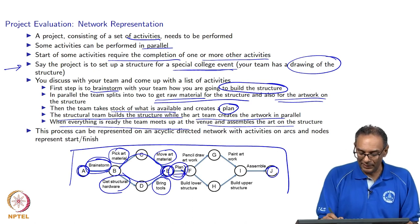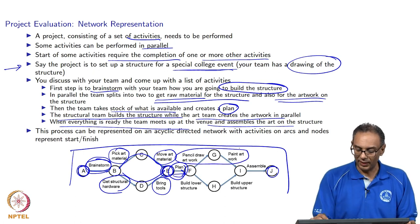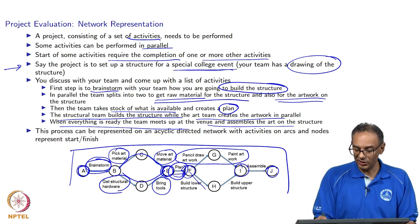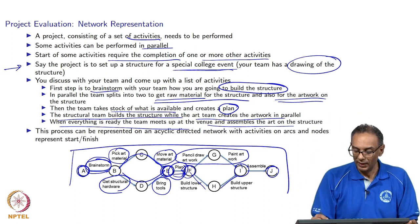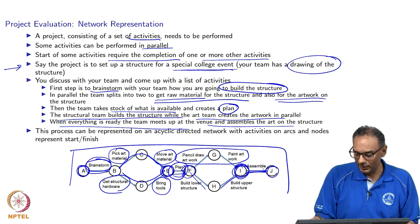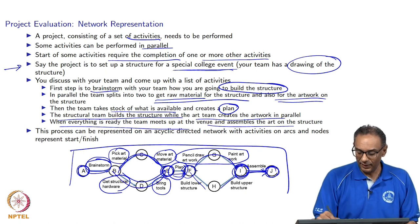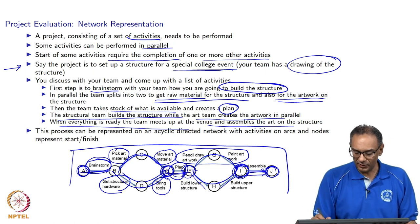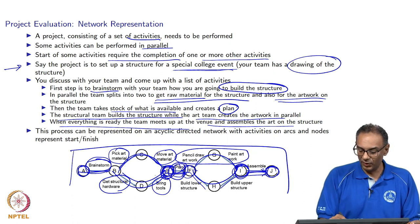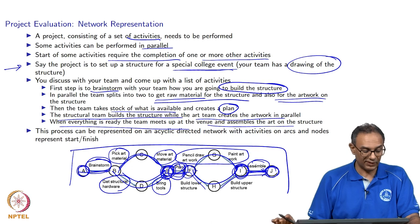Once we have all the materials at node E, we wait for whichever of the parallel activities finishes last, then sit down and plan. After planning, the art team can go ahead and pencil-draw and paint the art, while the structural team builds the lower and upper parts of the structure — both in parallel. Once everything is done, they bring it to the venue and assemble it. Notice that some tasks can be done in parallel while others must be done in series — for example, to start planning you must wait for both prior activities to be complete.